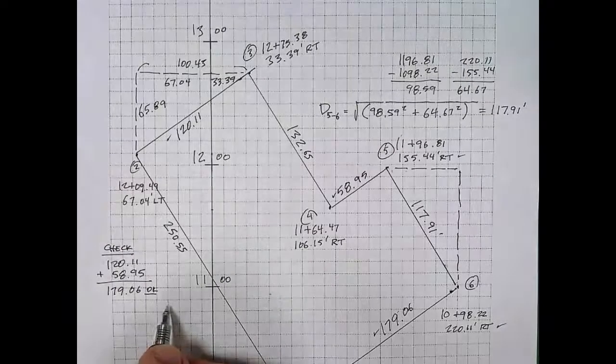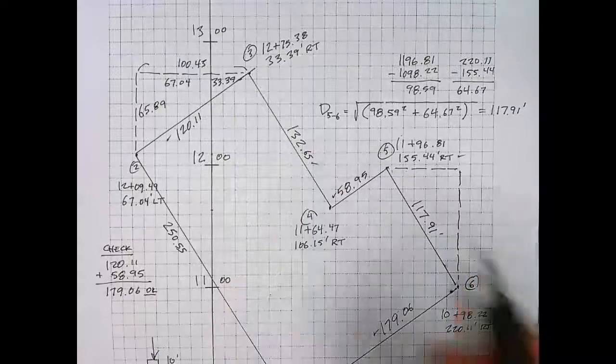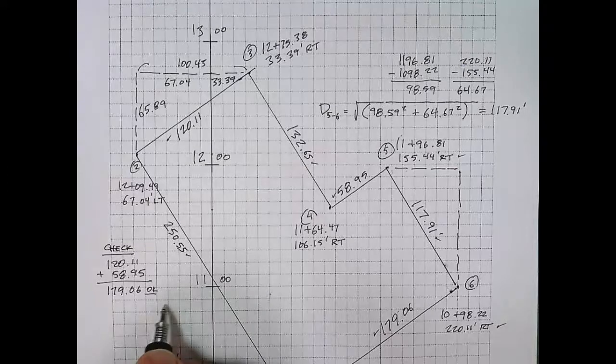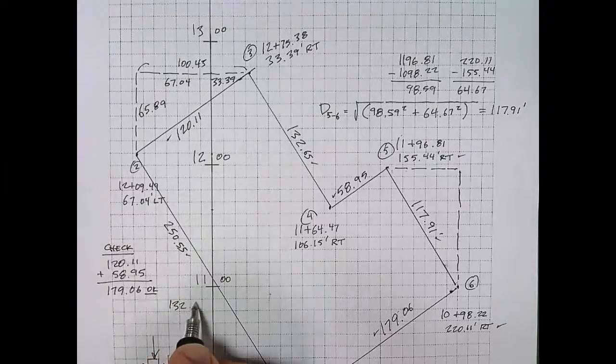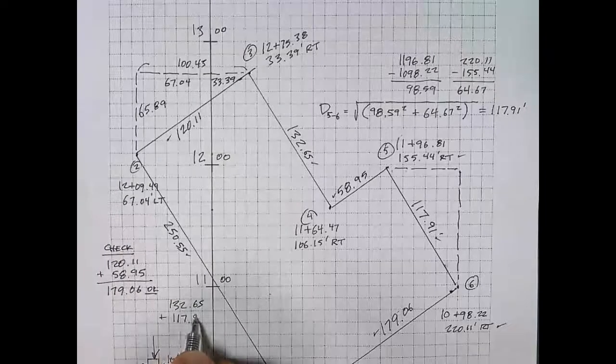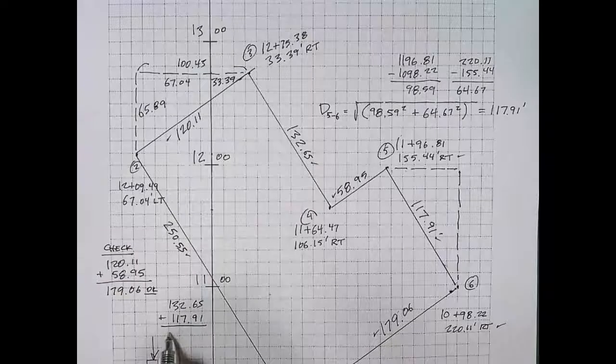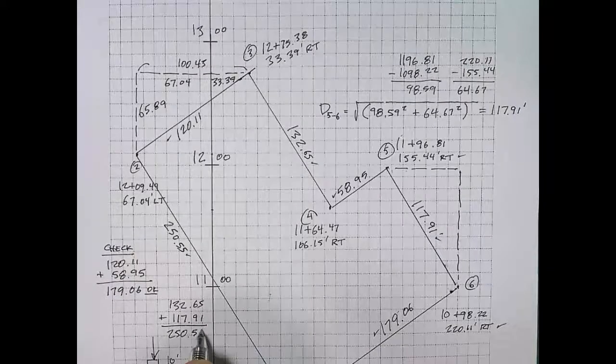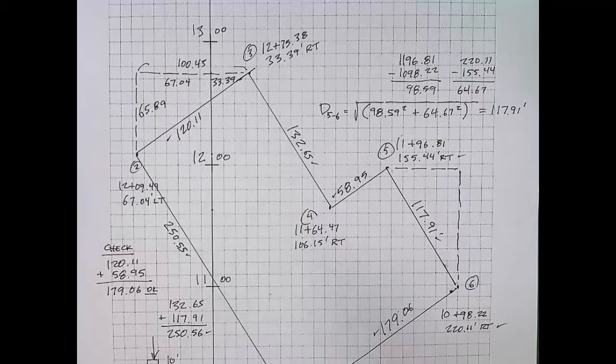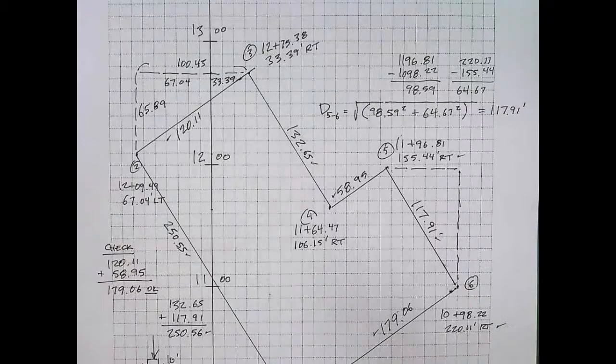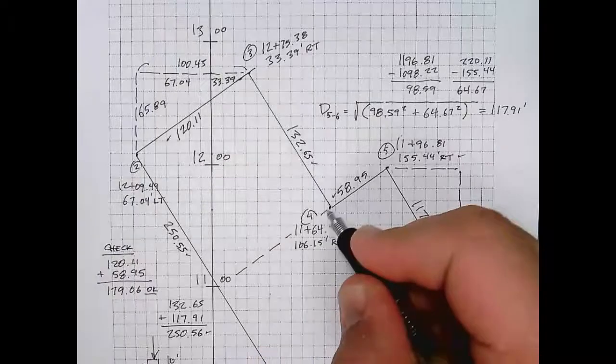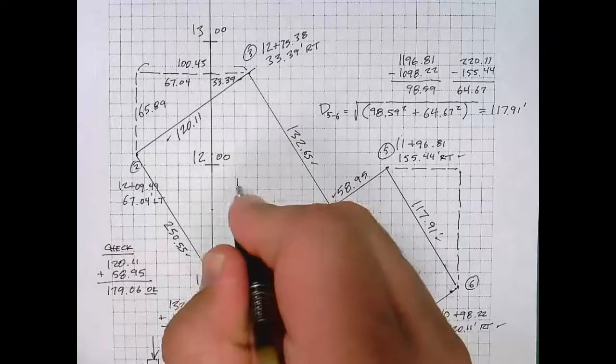So now let's consider the other three parallel sides and see how those add up. Side three-four is 132.65 feet long. Side five-six is 117.91 feet long. The sum of these works out to be 250.56. When I compare that to the 250.55 that I had calculated earlier, that's a very close match and the difference is just the result of rounding.